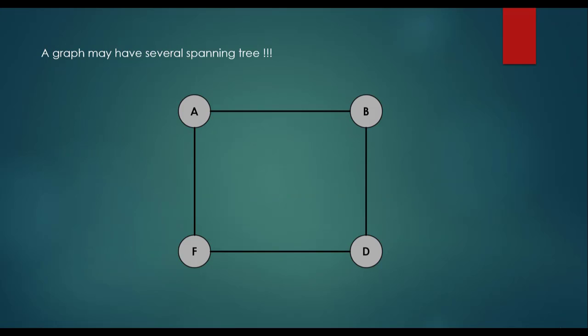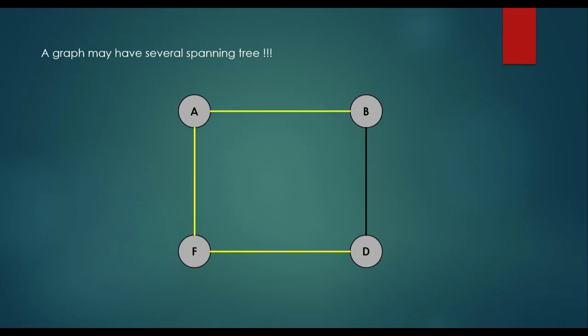There are two standard algorithms for solving this problem: the Prim-Jarník algorithm and Kruskal's algorithm — both are greedy algorithms. A graph may have several spanning trees. For example a graph with four vertices and four edges can produce different spanning trees. A spanning tree contains all vertices but doesn't need all edges — if we can connect all vertices with three edges, we don't consider the fourth.